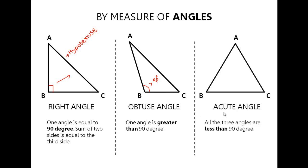The next triangle is the acute-angle triangle. In an acute-angle triangle, all of the angles are less than 90 degrees. That is, angle A, angle B, and angle C are all less than 90 degrees.